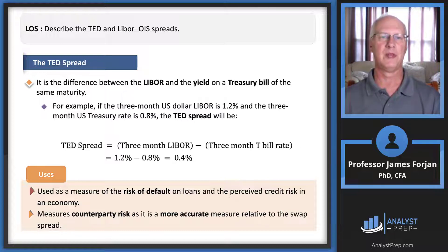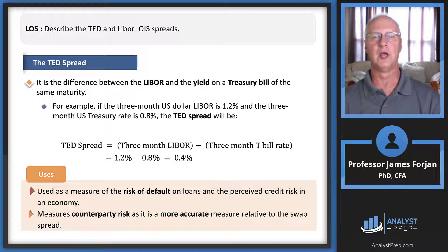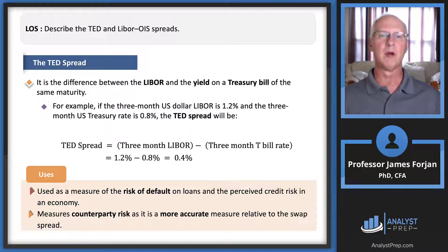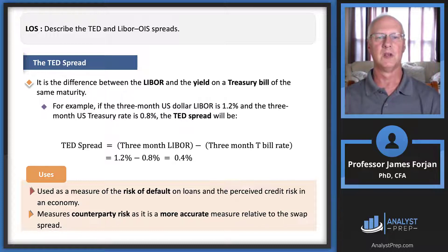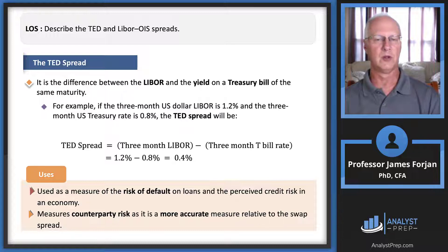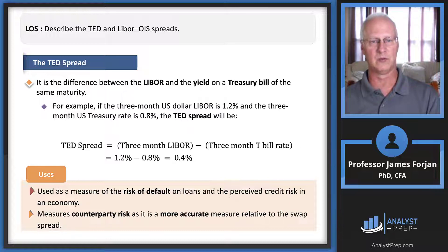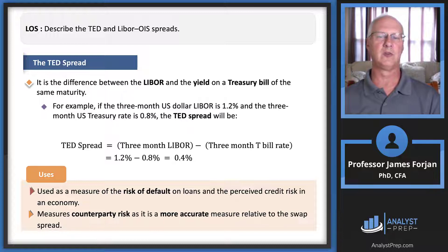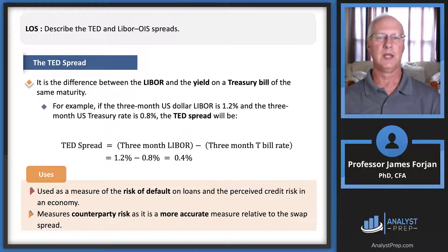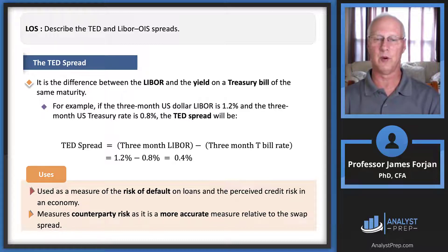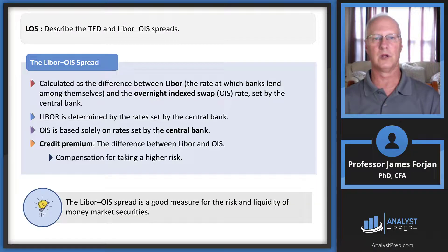The TED spread is the difference between LIBOR and the yield on a treasury bill of the same maturity. In our example it equals 0.4%. It is used as a measure of default risk on loans and as a gauge of the market's perceived credit risk and counterparty risk in the economy.